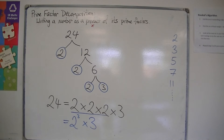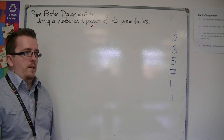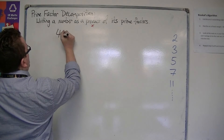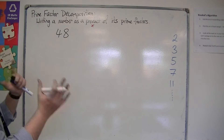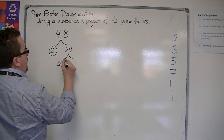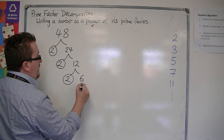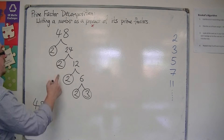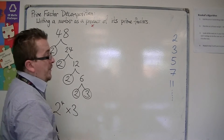Let's look at another one — a few different variations. Let's try 48. 48 is even, so 2 goes into 48 twenty-four times. 24 is even, so 2 goes into it 12 times. 12 is even, so 2 can go into that 6 times. 6 is even, so 2 can go into that 3 times. 3 is also prime, so 48 can be written as 2 times 2 times 2 times 2 times 3, which is 2 to the power 4 times 3. That's how it can be done relatively quickly.